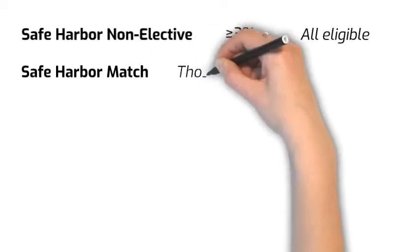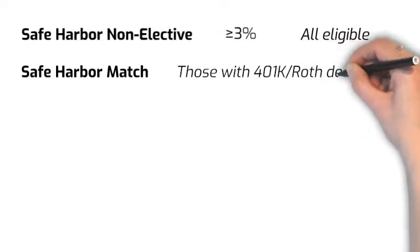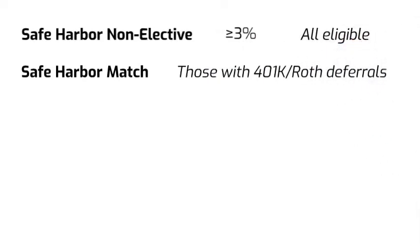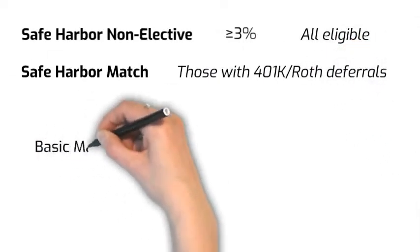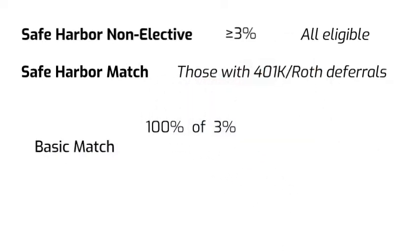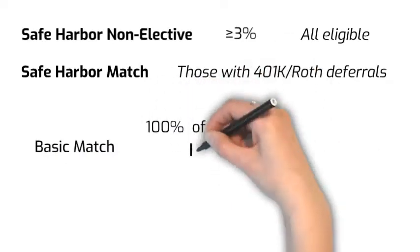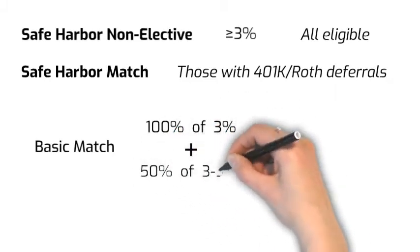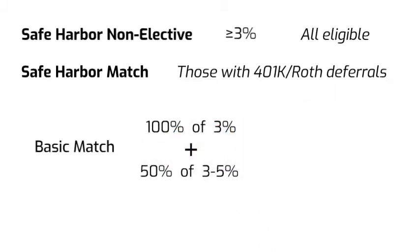Safe Harbor match, however, is only for those who have made 401k or Roth contribution during the year. The basic formula for Safe Harbor match requires employers to match 100% of the first 3% of deferred compensations and 50% of the next 2%. For example,